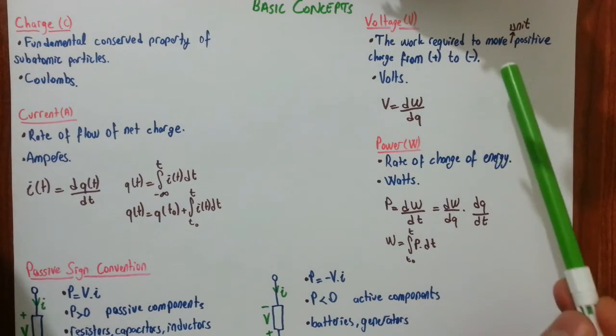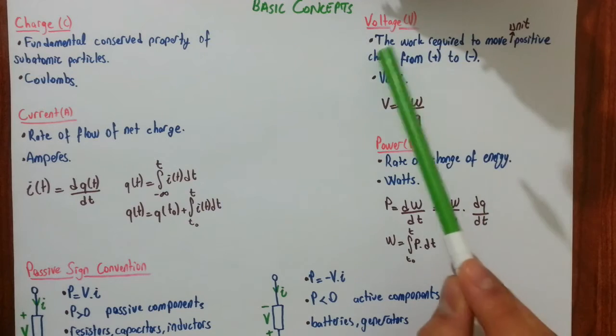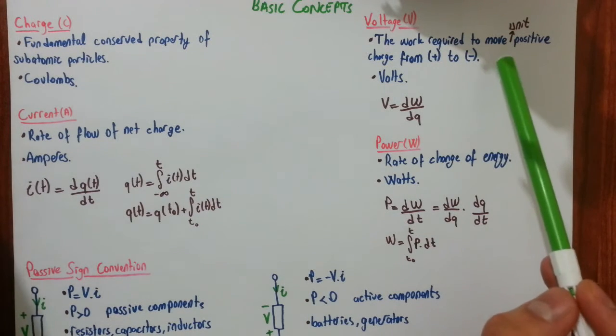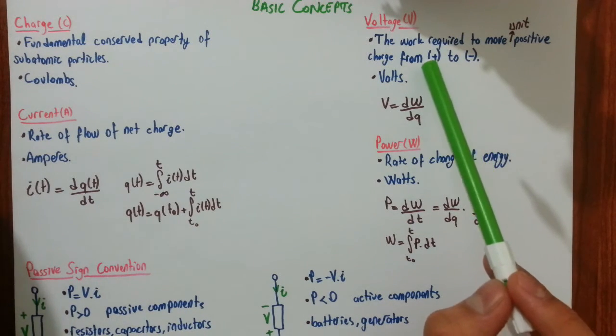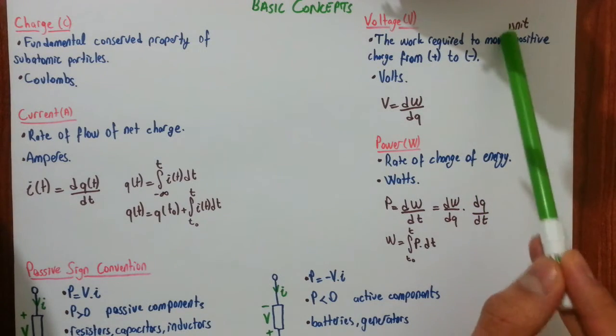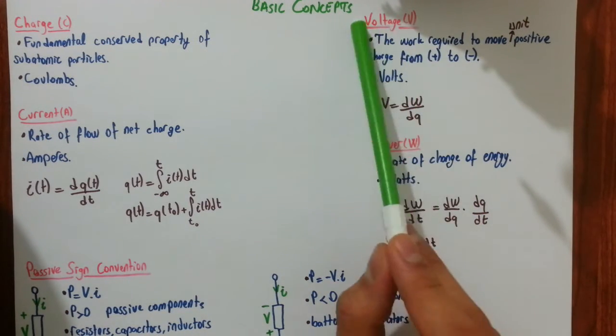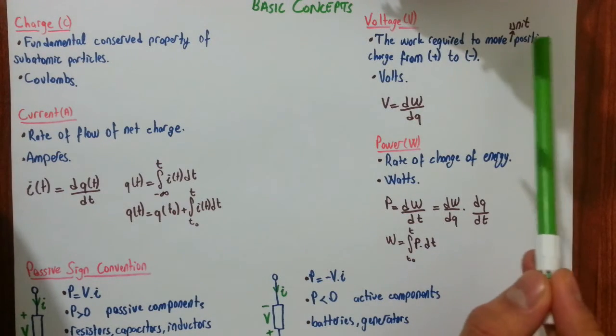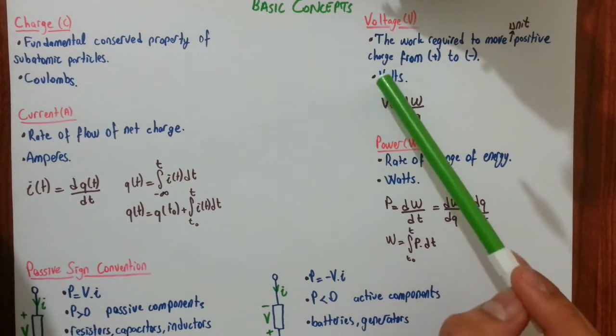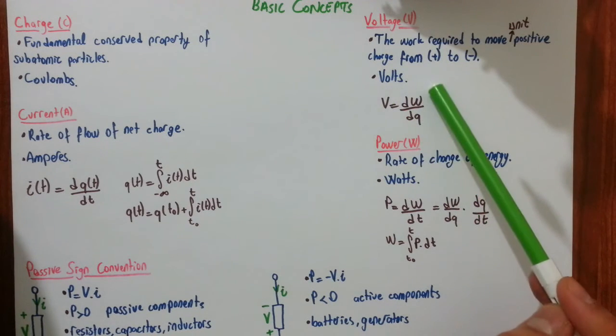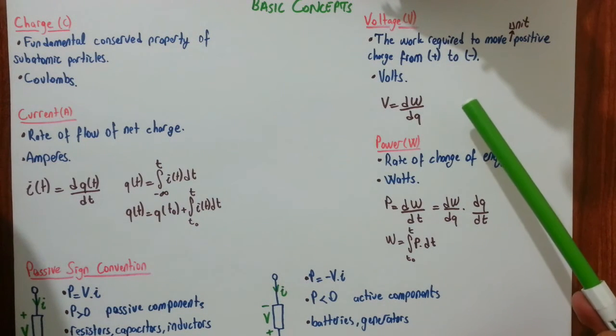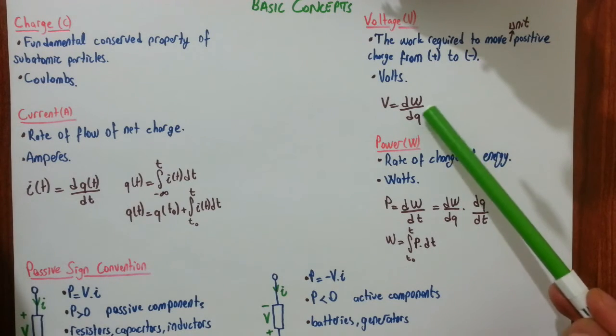Voltage. Voltage is the work required to move a unit positive charge from positive to negative. You may remember in freshman level physics, in some questions, you have two parallel plates. One is charged with negative and the other charged with positive. And you have a unit charge. And voltage is defined as the work required to move a unit positive charge from positive plate to negative plate. And SI unit of the voltage is volts. The mathematical interpretation of the voltage is given as such. W is the work or energy. And Q is the charge.